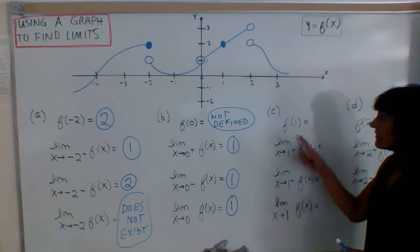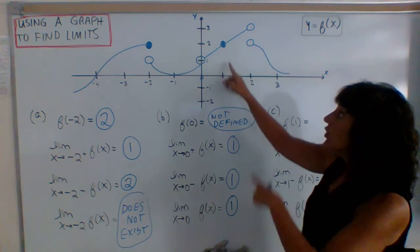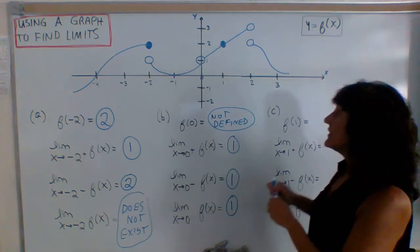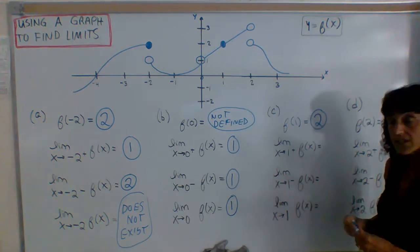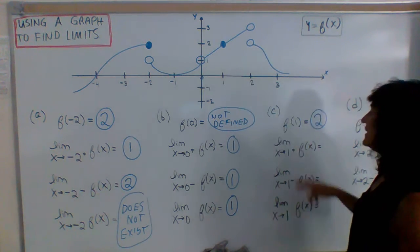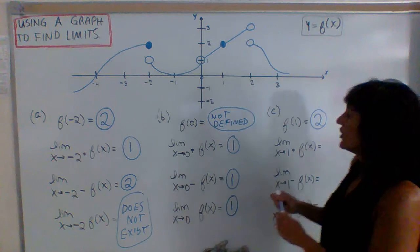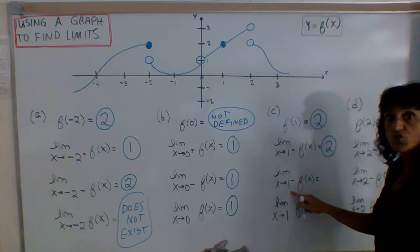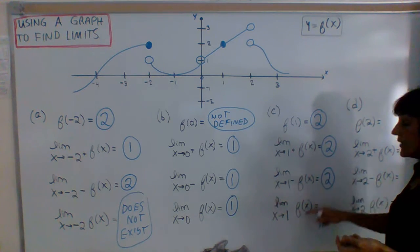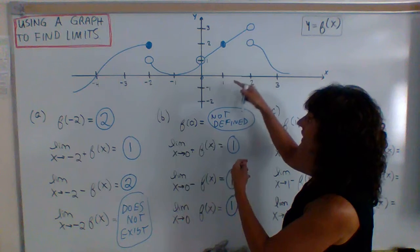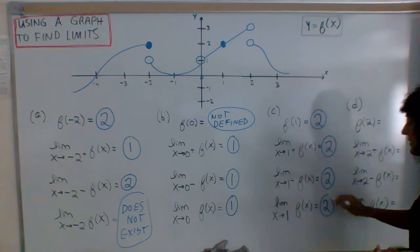Example C: we want the function value of 1. When x is 1, the y coordinate right there is 2. So f of 1 is 2. Now for limits — as x approaches 1 from the right, the y's are going to 2. As x approaches 1 from the left, the y's are also going to 2. So the limit as x approaches 1 exists and equals 2, because both one-sided limits agree.